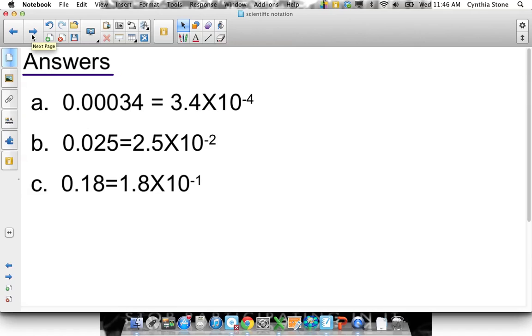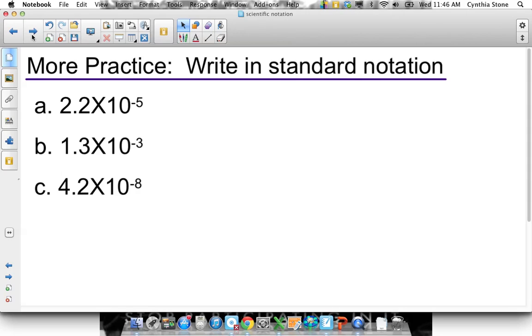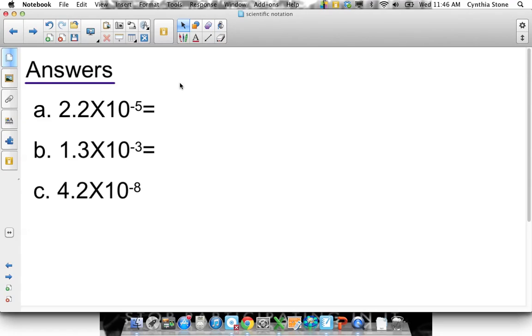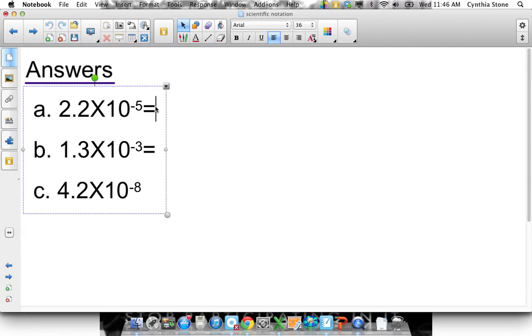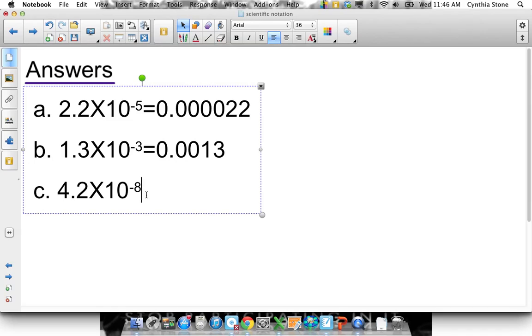Just some more practice. Write these out in standard notation, going in the opposite direction. And the answer is I've got to write out 5 zeros. 1, 2, 3, 4, 5, 2, 2. Here, I've got to write out 3 zeros. So 1, 2, 3 zeros total. Okay, 8 zeros. So that's 1, 2, 3, 4, 5, 6, 7, 8. Okay?